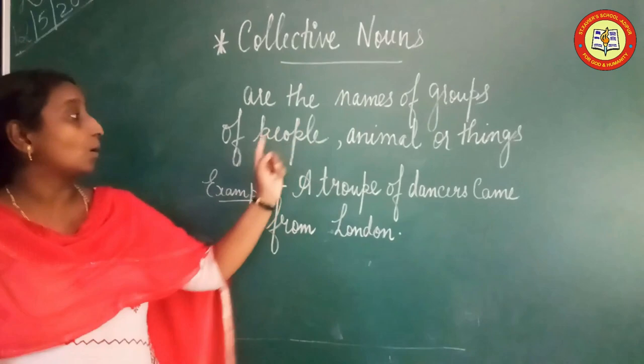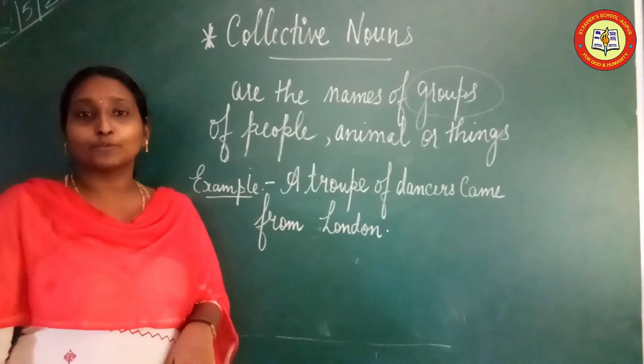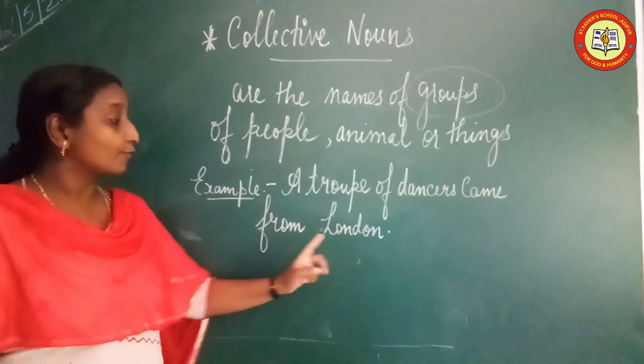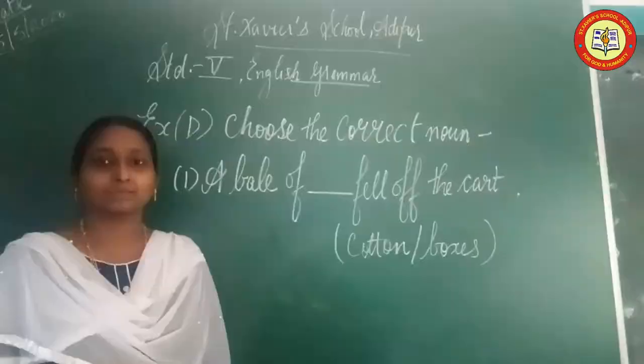The third type is Collective Noun. Collective Nouns are names of a group of people, animals or things. In the collective noun, it refers to things that come in a group — such as 'the bouquet of flowers' or 'the team of cricket players.' One example: 'A troupe of dancers came from London.' Here, 'troupe of dancers' is a Collective Noun. Whatever comes in a group is known as a Collective Noun.